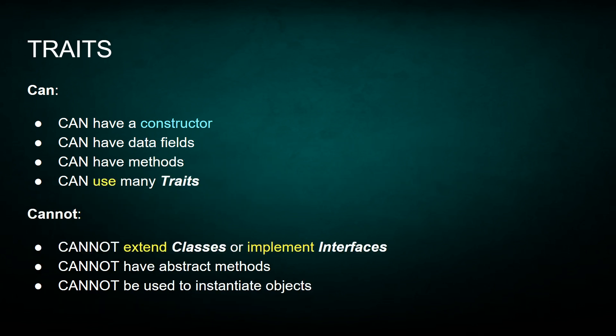Next, let's talk about traits. A trait can have a constructor, it can have data fields and methods, and can use many other traits. Traits behave very similarly to a class, except a trait cannot extend classes or implement any interfaces. It cannot have abstract methods, and it cannot be used to instantiate objects.